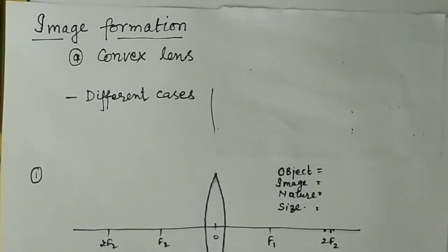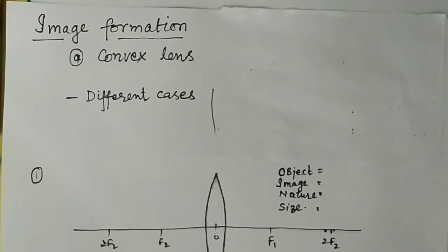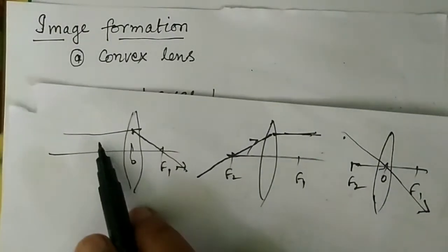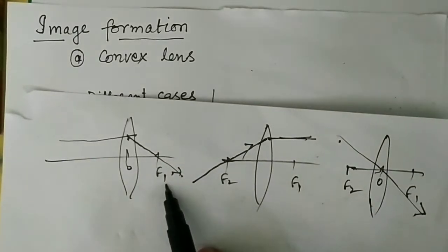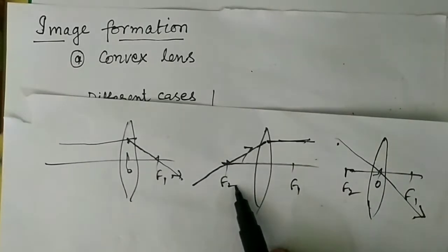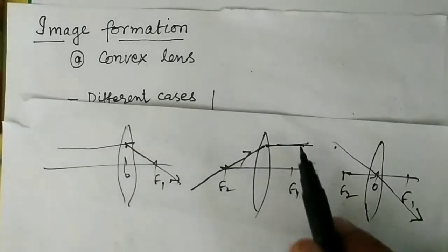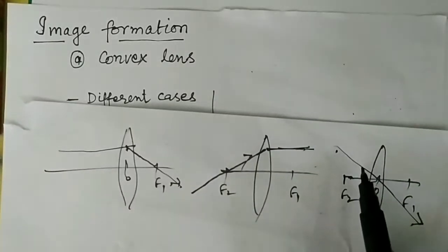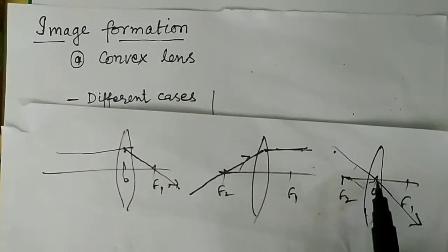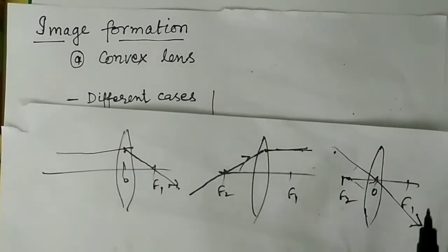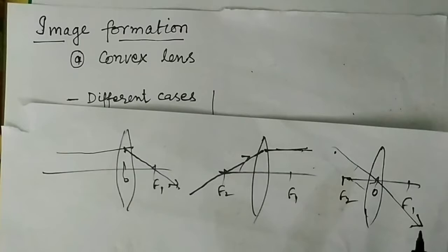In this video, we will discuss image formation for the case of a convex lens. The rules for formation of images are: any ray which is parallel will pass through principal focus F1; any ray passing through principal focus F2 will become parallel to the principal axis; and any ray passing through the optical center will go without any deviation. These three rules we will use to form images.